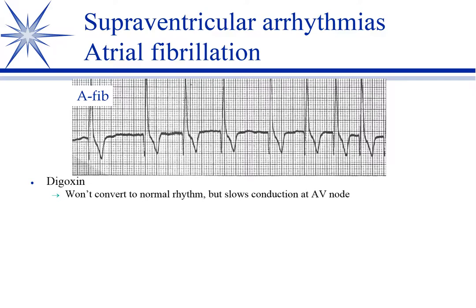In atrial fibrillation, the atria are just quivering — not a coordinated contraction. Because the atria are constantly depolarizing, the AV node is being hit again and again with impulses, so high heart rates are a common problem. In human medicine, if it's idiopathic, they will do electrical defibrillation, just like with ventricular fibrillation. President Bush I had atrial fib and his vice president Dan Quayle was president for about 30 minutes while they did the defibrillation procedure.